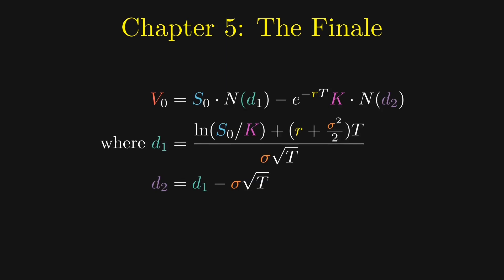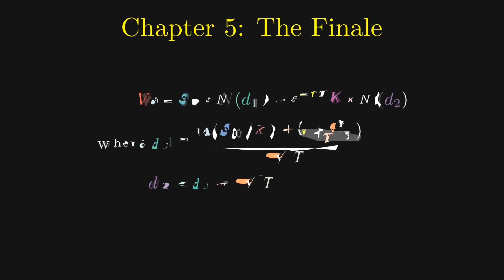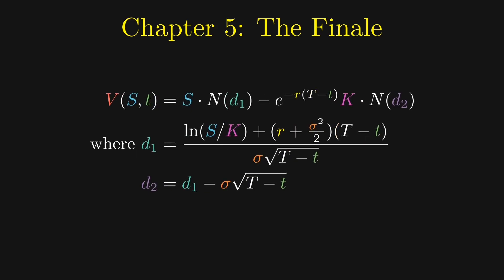If we want to evaluate the price of a call option at an arbitrary time small t, we can substitute the stock price at time small t and change the term T to T minus small t to indicate the remaining duration of the call option.